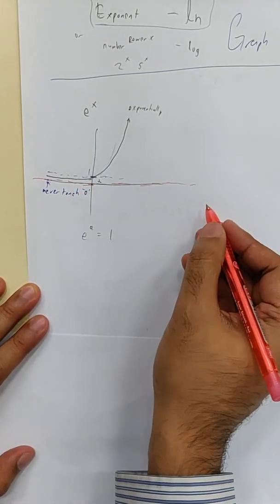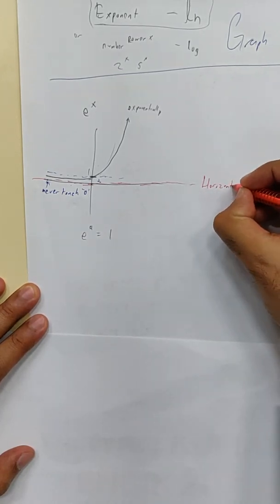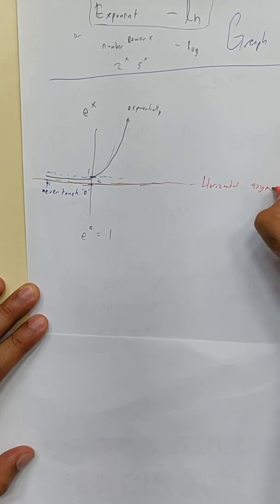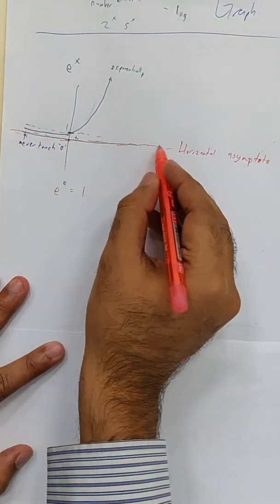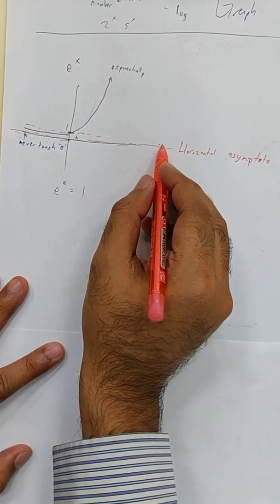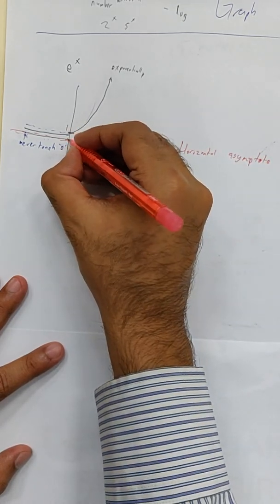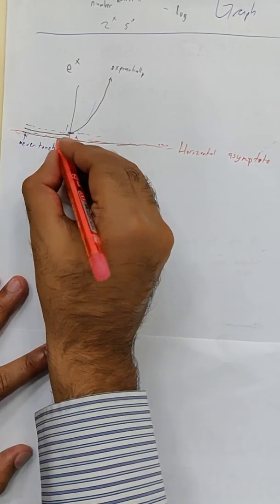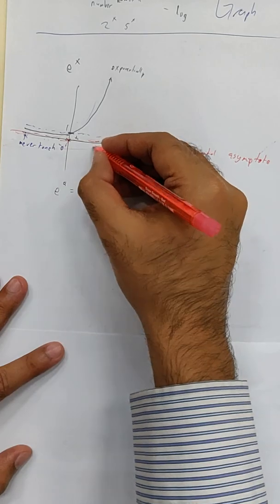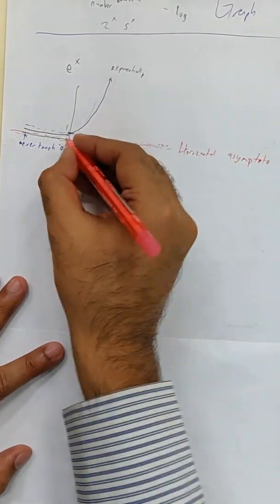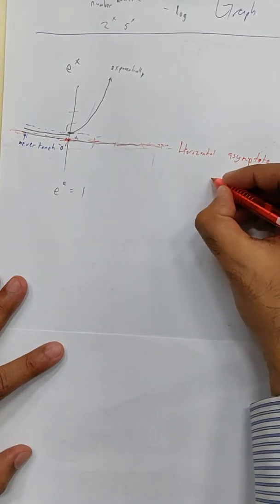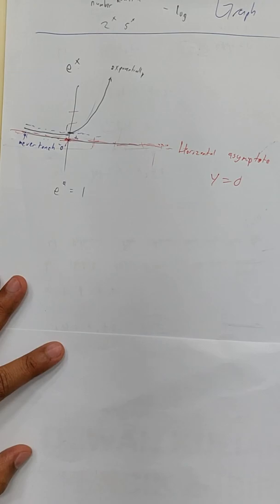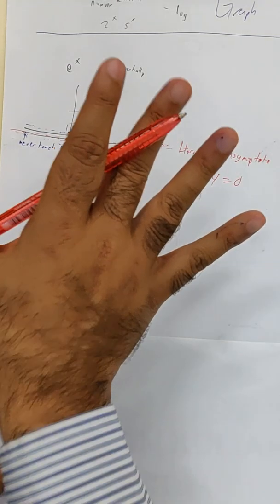Is it horizontal or vertical? It's horizontal. Asim — I'll check the spelling later. This is the horizontal asymptote. Here, y equals zero all along that line. So we call it the horizontal asymptote at y equals zero. That is the character of e^x.